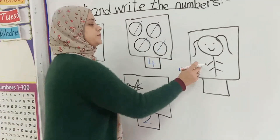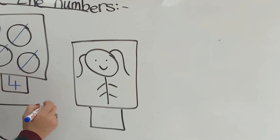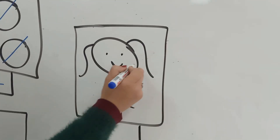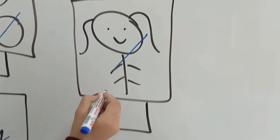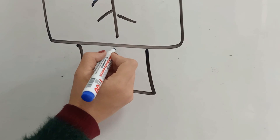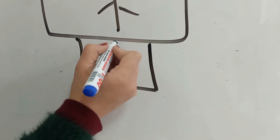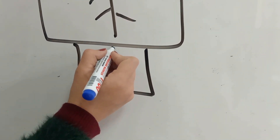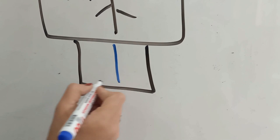Excellent. How many stars here, KG1? One. Excellent. How do we write number one? Starting point, down in a long stick.